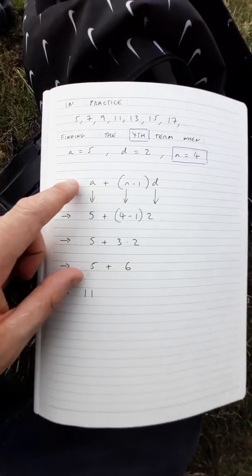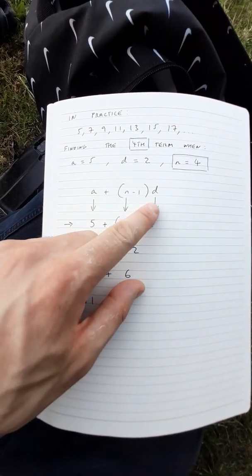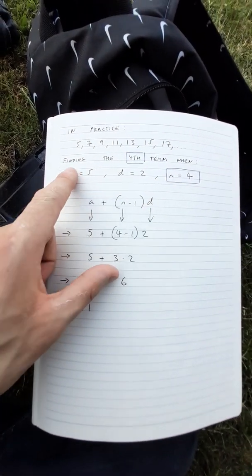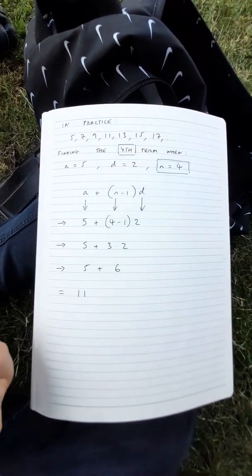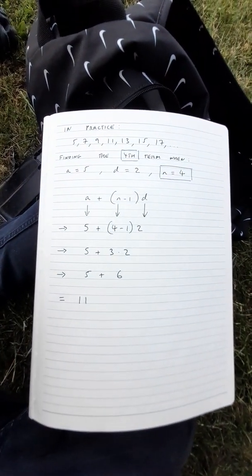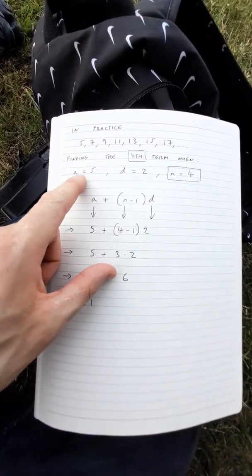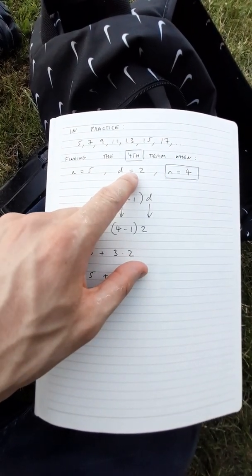Now let's use the expression a plus n minus 1d in practice. We have the sequence 5, 7, 9, 11, 13, 15, 17 just like in the first example. And the first term is 5 and the common difference is 2.